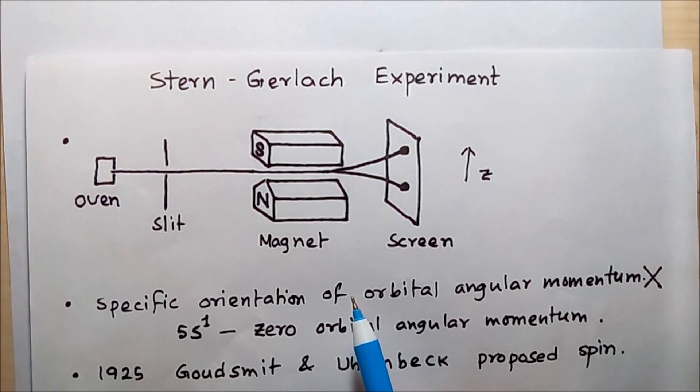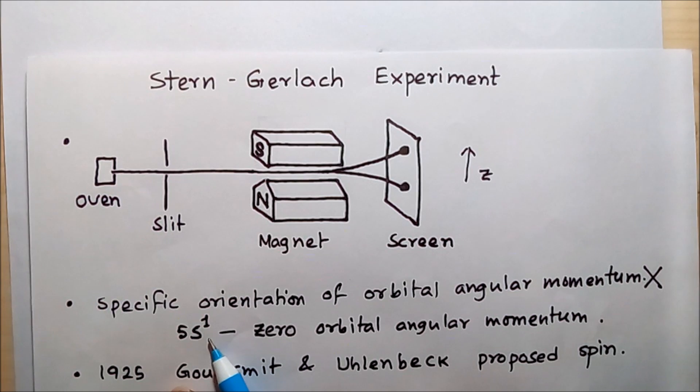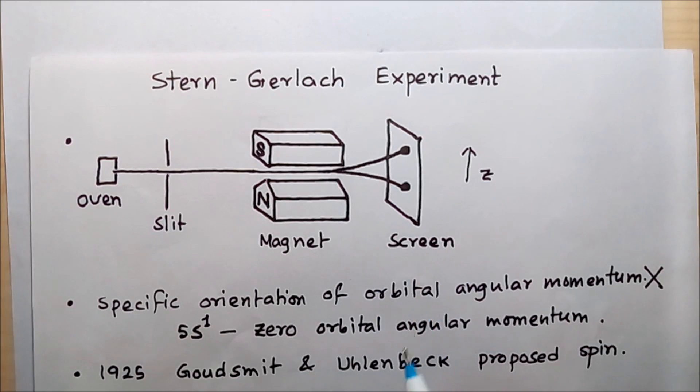They tried to describe the distinct spots by the specific orientation of the orbital angular momentum, but this turned out to be wrong. The outermost electron of the silver atom is in the 5s¹ state, which has zero orbital angular momentum. So the theory provided by Stern and Gerlach was wrong.